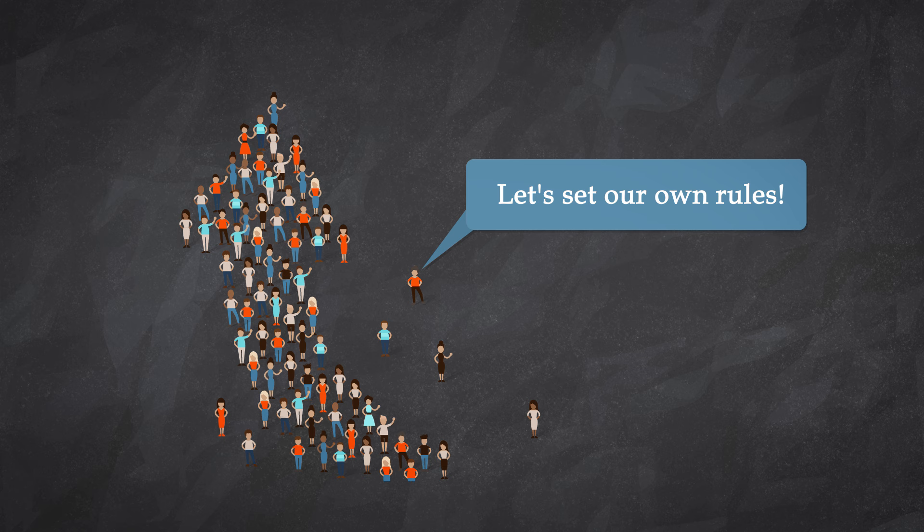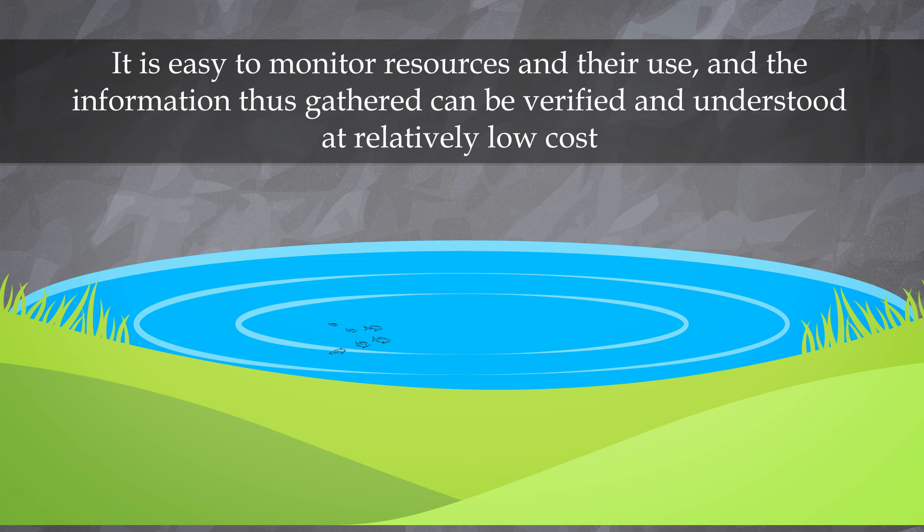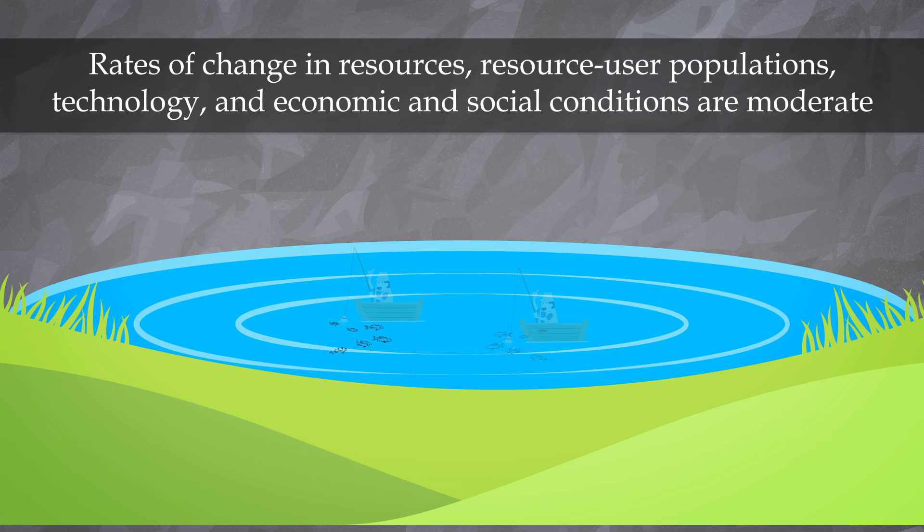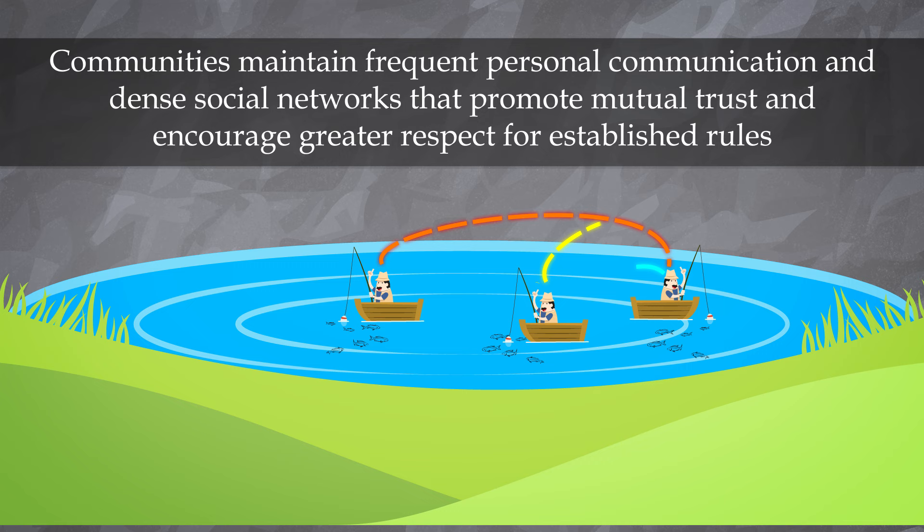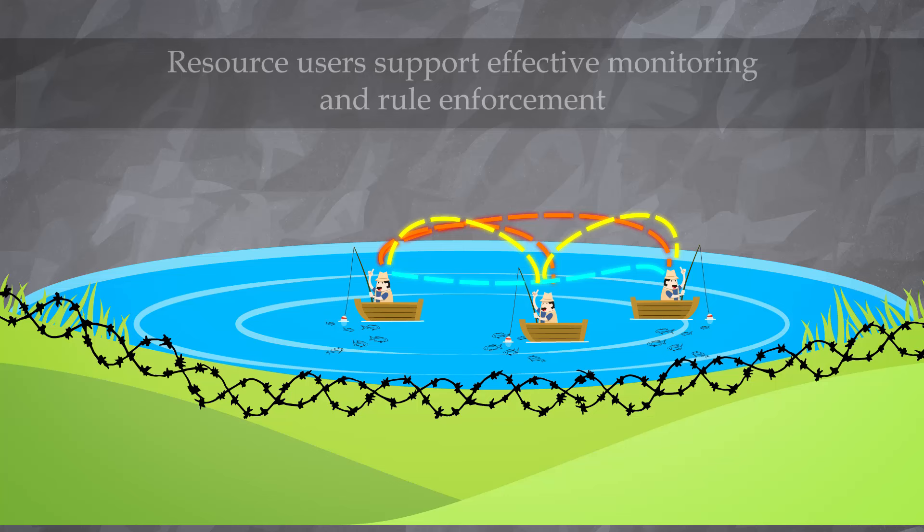Contrary to what has been implied by Hardin's work, people using a common resource are not necessarily condemned to repeat the tragedy of the commons. They can talk things through and create adequate institutions. Effective management of shared resources gets easier as more of the following conditions are met: It is easy to monitor resources and their use, and for the information thus gathered can be verified and understood at relatively low cost. Rates of change in resources, resource use population, technology, and economic and social conditions are moderate. Communities maintain frequent personal communication and dense social networks that promote mutual trust and encourage greater respect for established rules. The community can exclude outsiders at a relatively low cost from using the common resource. Resource users support effective monitoring and rule enforcement.